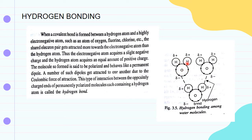Since opposite charges are separated by a distance, they are called a dipole. The molecule so formed is said to be polarized and behaves like a permanent dipole.